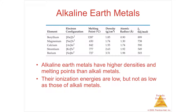The alkaline earth metals are in Group 2A. They are going to be harder and more dense. They lose two electrons and still form cations, but they form a 2+ cation.